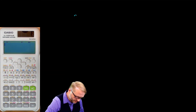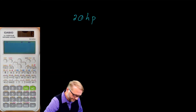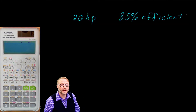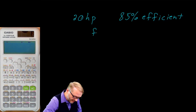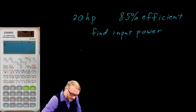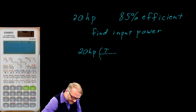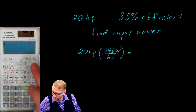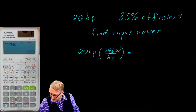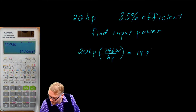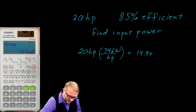Let's suppose you have a 20 horsepower motor that is 85% efficient, and you're asked to find the input power. Our opening move is to take that 20 horsepower and convert it into kilowatts. We know there are 746 watts per horsepower, which gives us 20 times 746, so that's about 14.9 kilowatts.